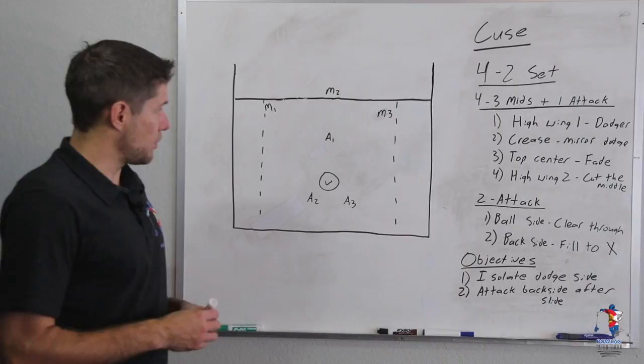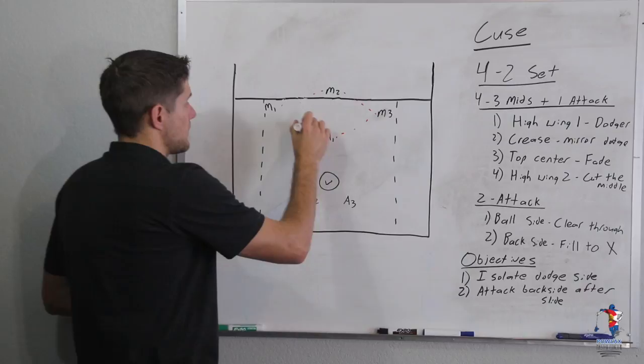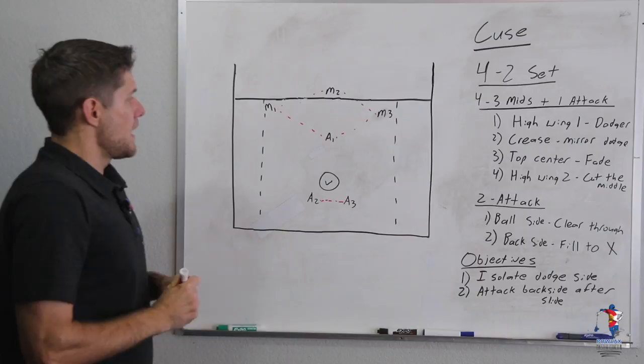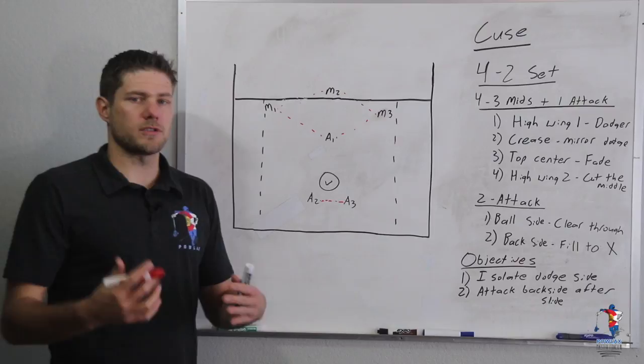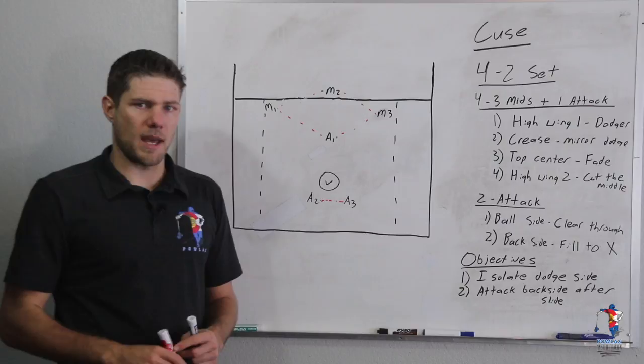The four players are all of the midfielders and one attackman. The two players are just the other two attackmen. By simply redefining the groups, we are going to pull some players into areas of the field where they're not used to being and the motions are a little more dynamic.